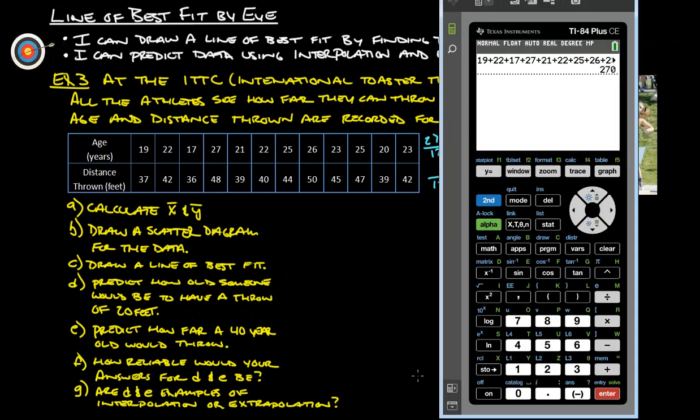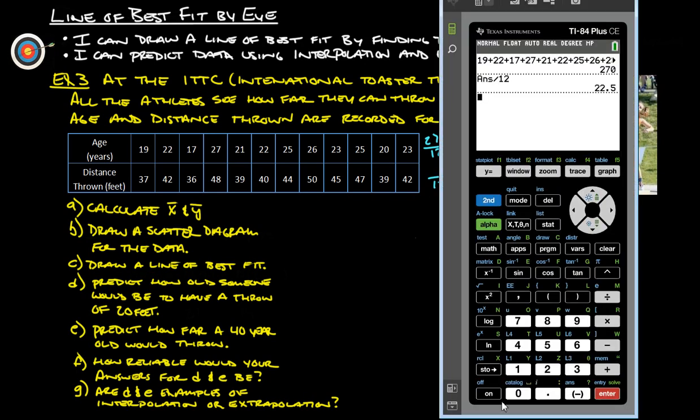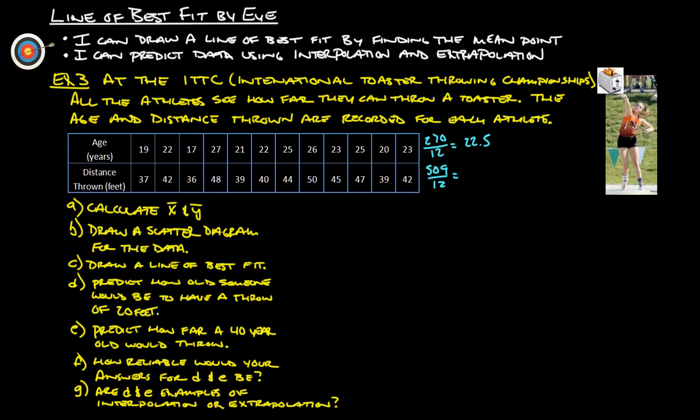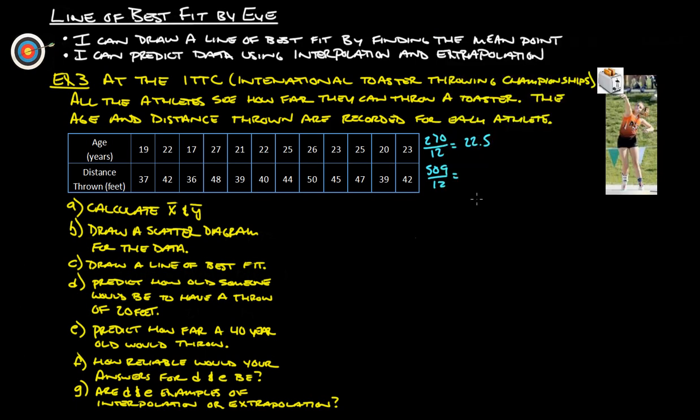So we take that, divide it by 12. Our mean point is 22.5. Now we can do the same thing for y. Put that all in there, push enter, and that gives us 509. We take our 509 and divide it by 12, and we get 42.416. So let's do 42.4.